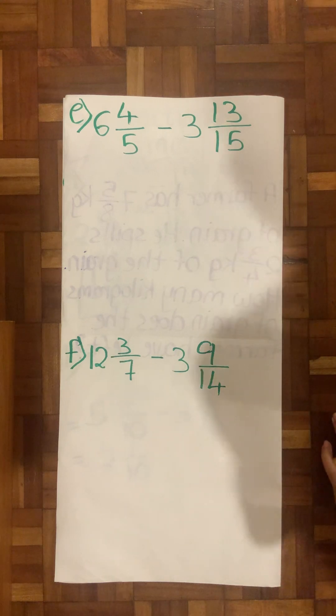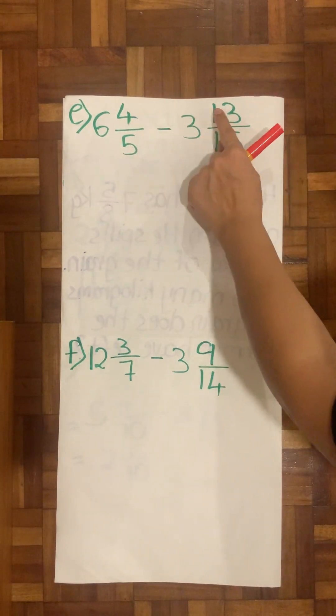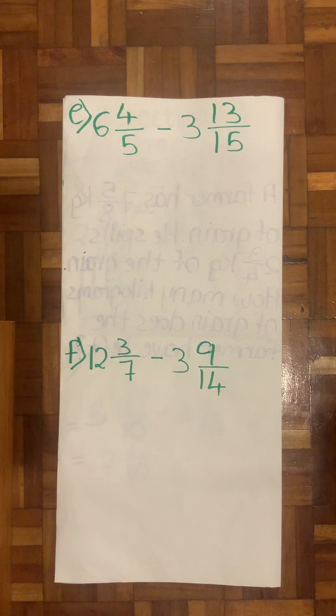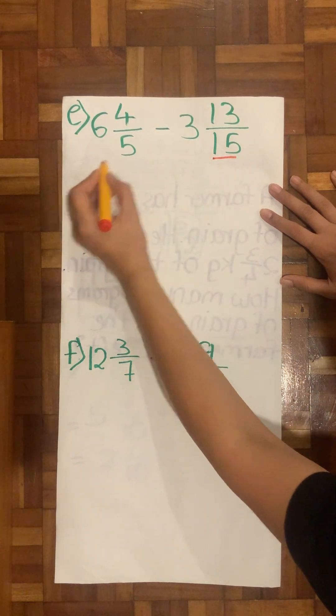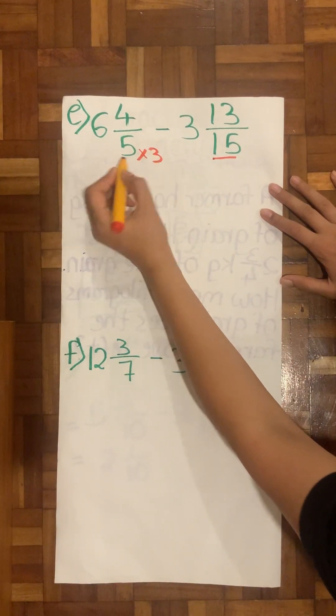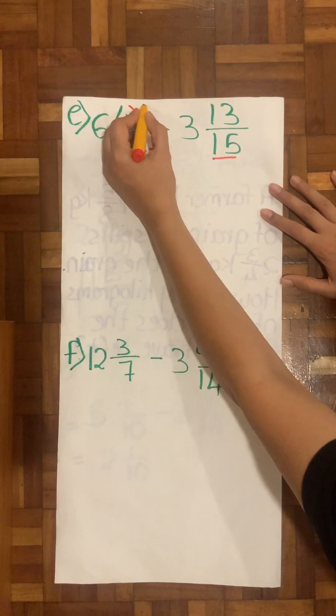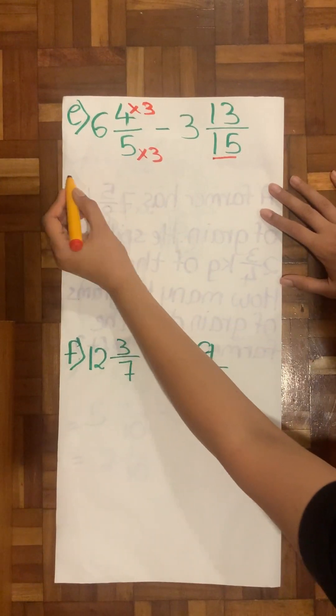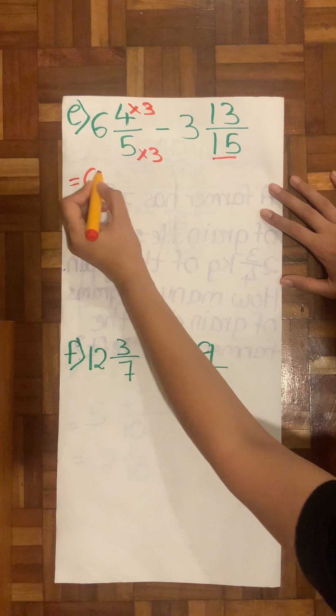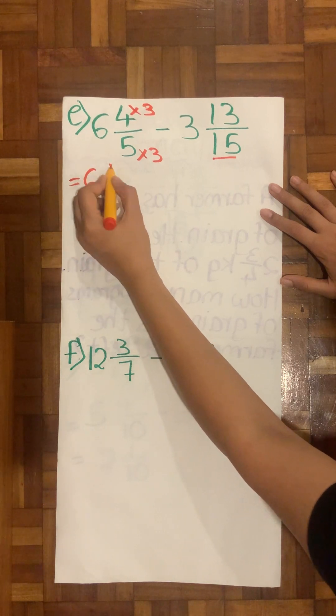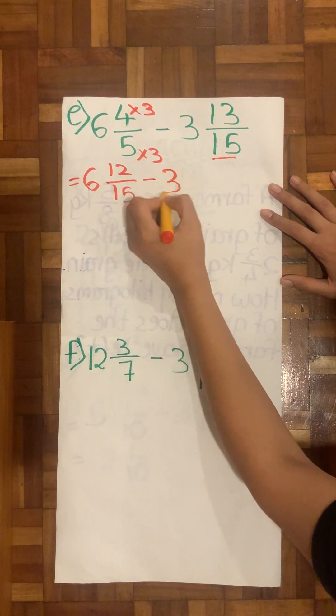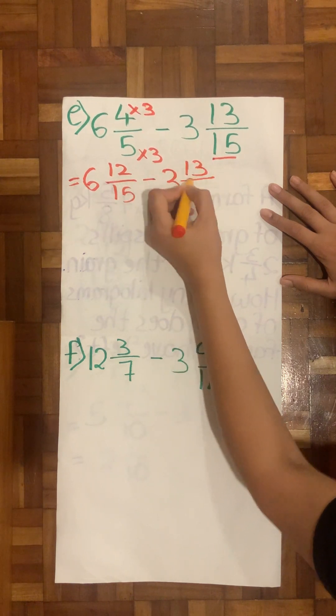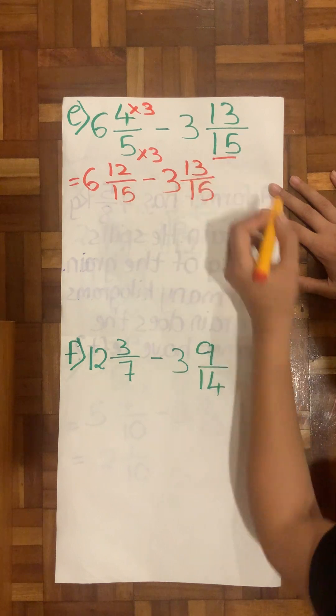So both the methods, whichever is comfortable is what we can go for. My next question says 6⁴⁄₅ minus 3¹³⁄₁₅. Therefore first I will check on my denominator. The first rule. Therefore 5 times 3 is 15, and 4 times 3 is 12.